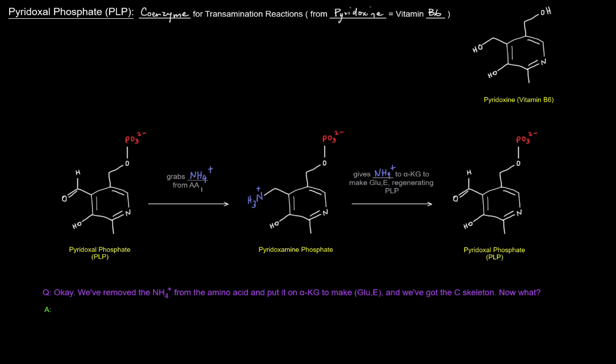So at this point, we've removed the NH4 plus from the amino acid, and we put it onto alpha-ketoglutarate to make glutamate. And we've got the carbon skeleton. Now what happens? Well, that's what we'll find out in the next video.